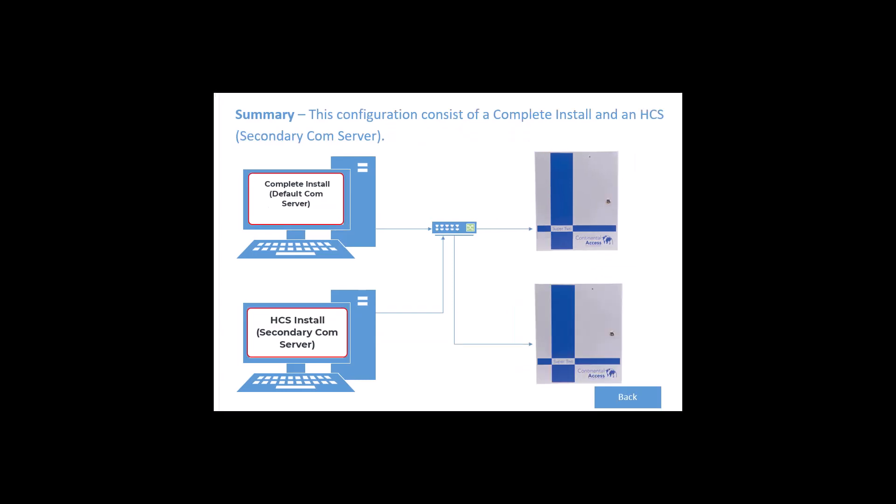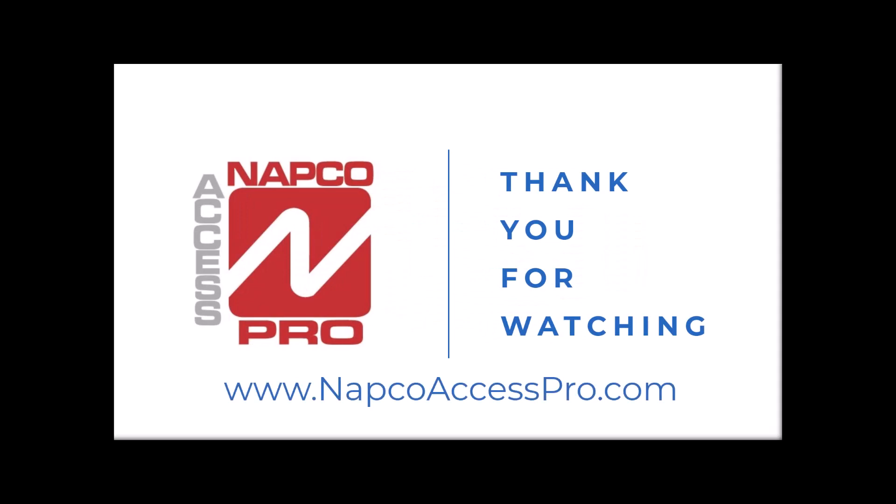The last configuration we will discuss is a complete install with a secondary HCS, also known as a secondary comm server. A secondary comm server is recommended when a system contains many panels and badges, and is used for load balancing the system. In the following video, we will perform a complete install. This concludes this QuickHelp video on preparing for a CA4K installation. Thank you for taking the time to watch this video.